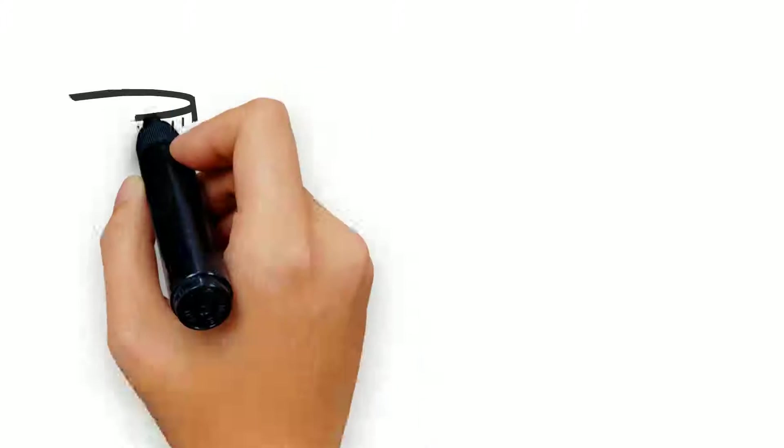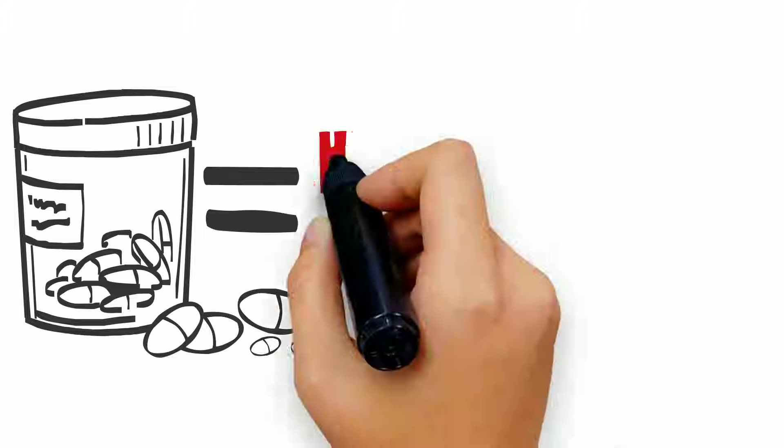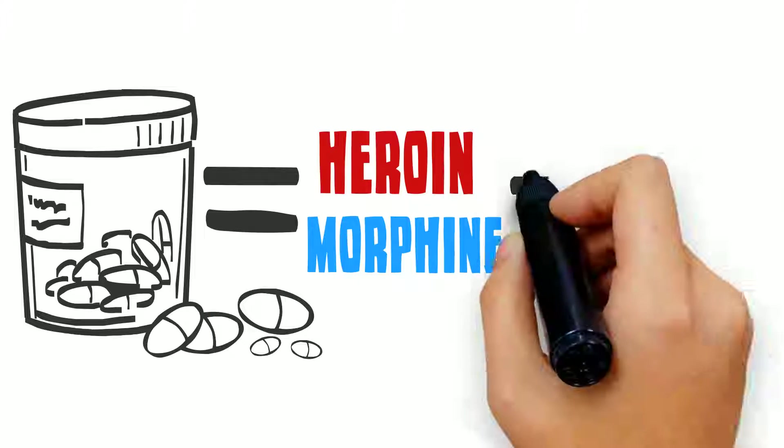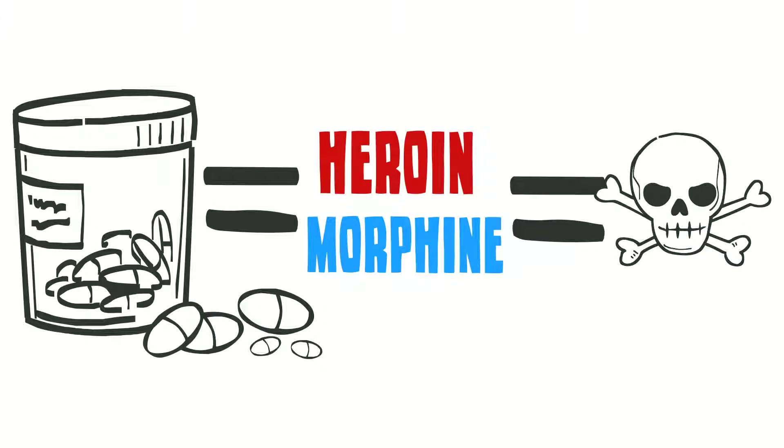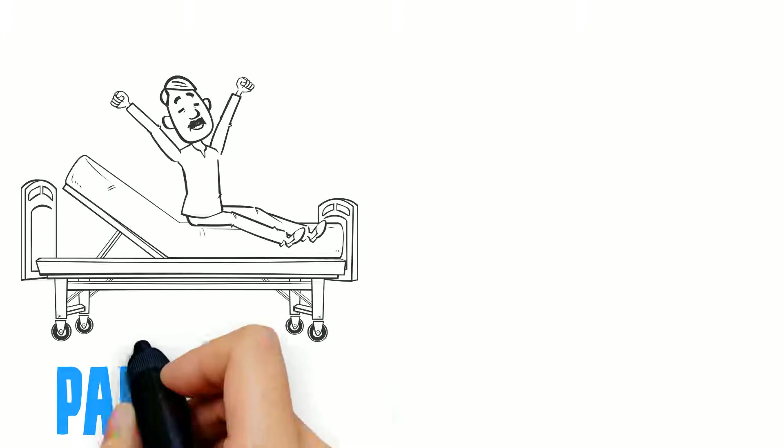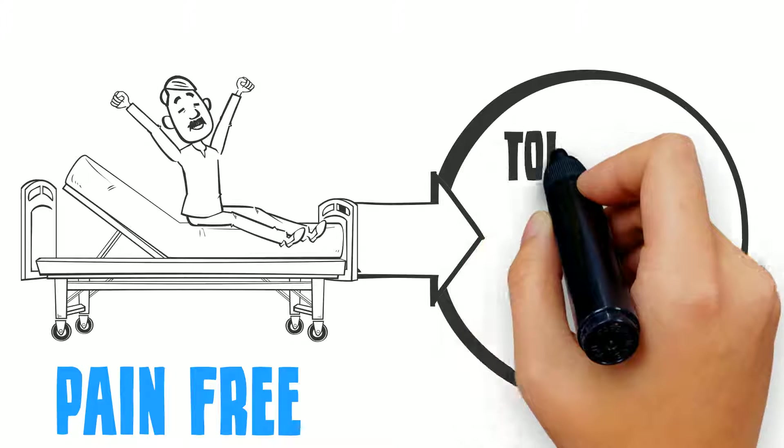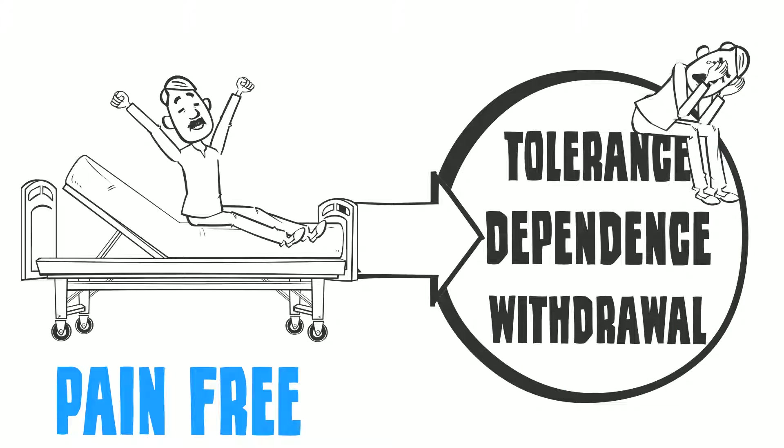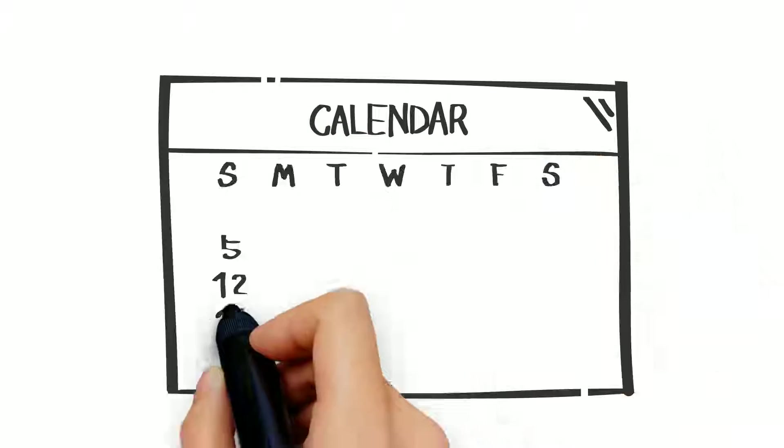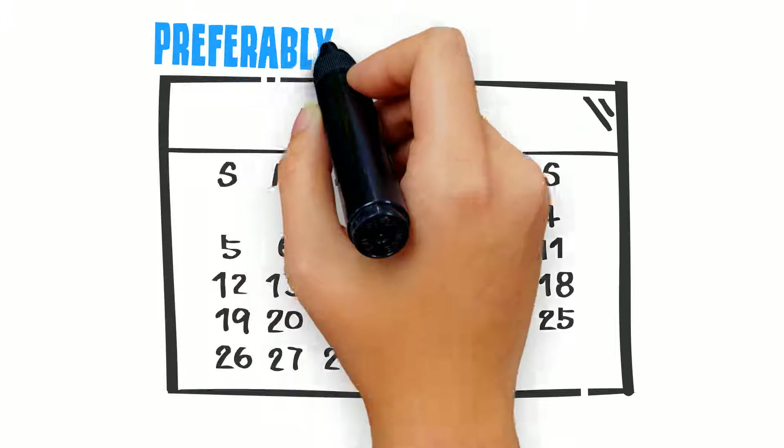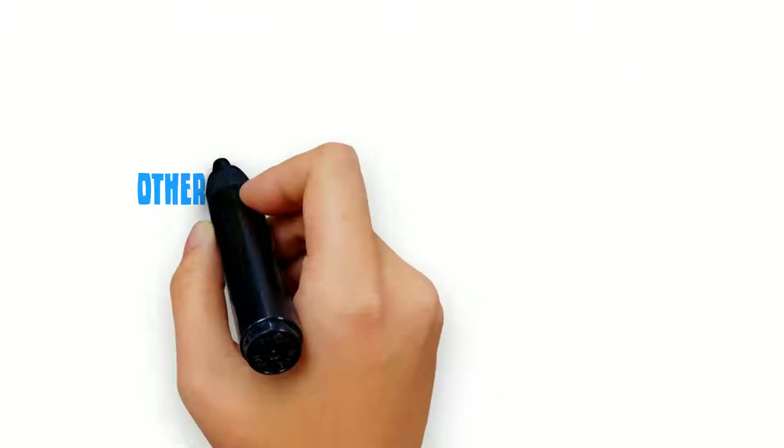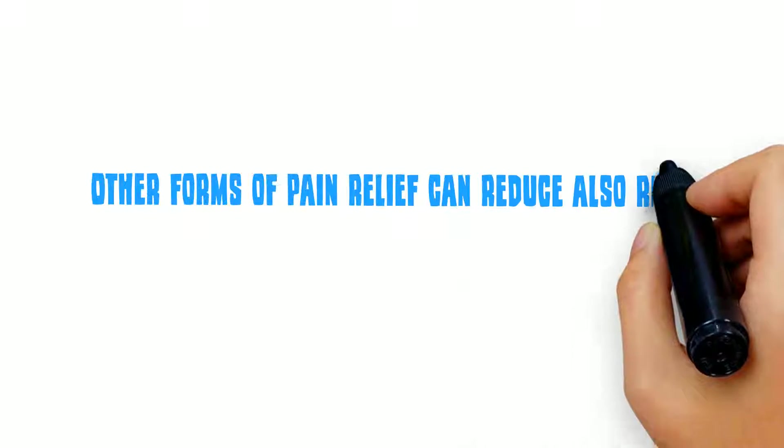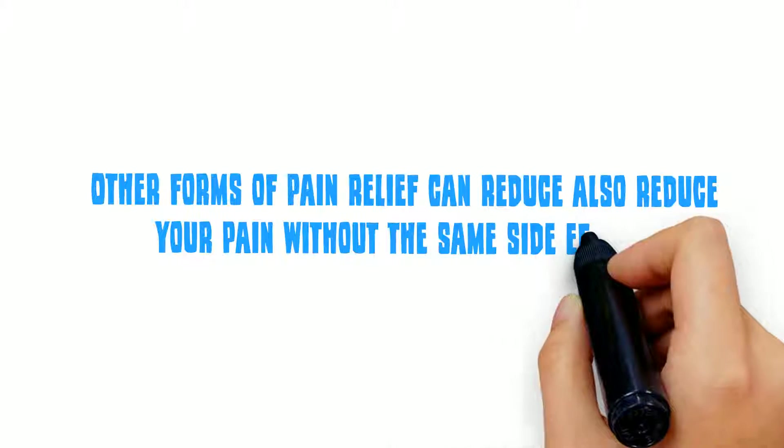In summary, pain pills are in the same class of medications as heroin and morphine, and can be dangerous. Pain pills work great at relieving pain, but they also cause tolerance, dependence, withdrawal, and possibly addiction. It is best to use pain pills for as short a time as possible, preferably less than three days. Other forms of pain relief can also reduce your pain without the same side effects.